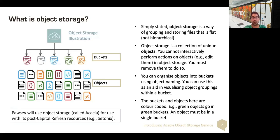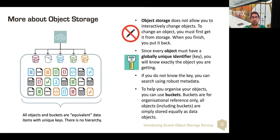Pawsey uses an object storage called Acacia with interactions with systems like Setonix. The critical difference between object storage and file systems in terms of user experience is that object storage does not allow interactively changing objects. You must first retrieve it from storage, and once you're done manipulating the data, put it back. Since every object is in a flat hierarchy, they must have a globally unique identifier key, which tells you exactly where the object is when you retrieve it. If you don't know the key, you can search using metadata searches. You can also organize your objects using buckets. Buckets are for organization and reference only, and you can have sub-buckets.